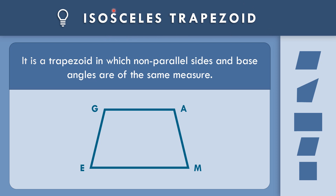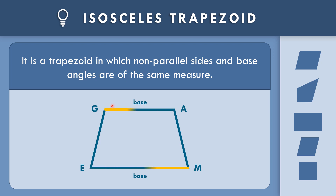What is an isosceles trapezoid? It is a trapezoid in which the non-parallel sides and base angles are of the same measure. Line segment GA and line segment EM are parallel but not congruent. They serve as the two bases. The non-parallel sides are line segment AM and line segment GE, and line segment GE is congruent to line segment AM.